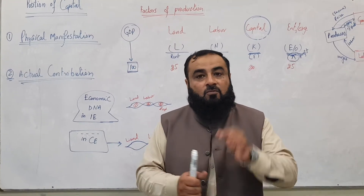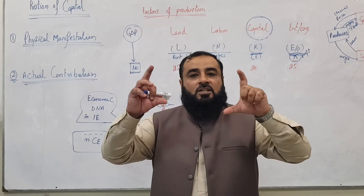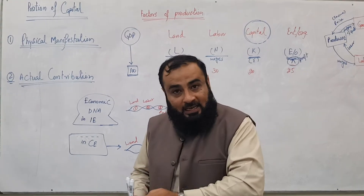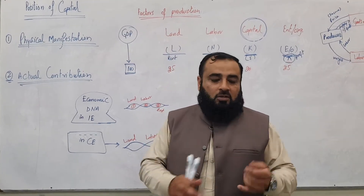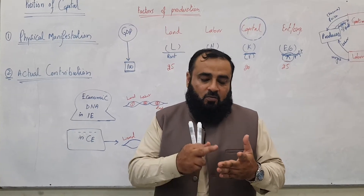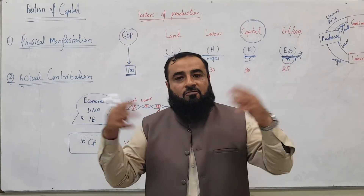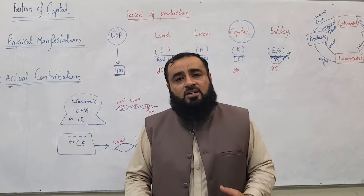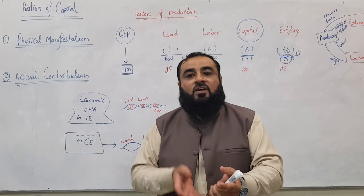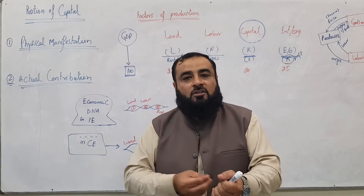What is the actual contribution of land? The actual contribution includes: the location of land, the fertility of land, the minerals found in the land, the irrigation system, the environment, and the weather. All these things collectively make land a factor of production — these qualities are known as the actual contribution of land.